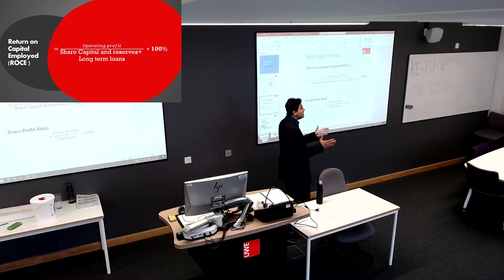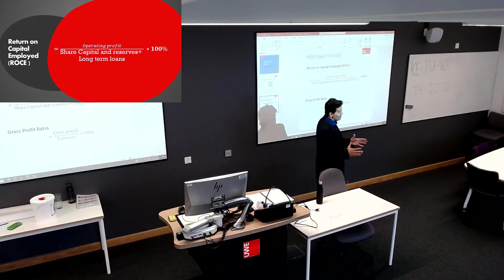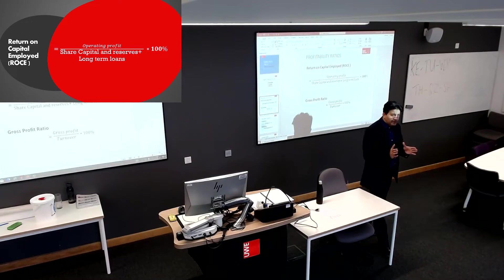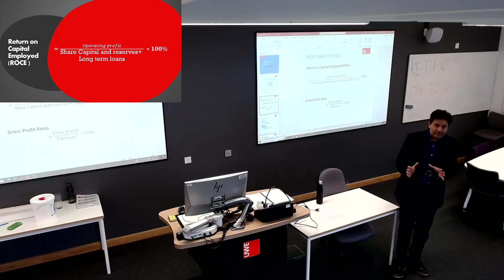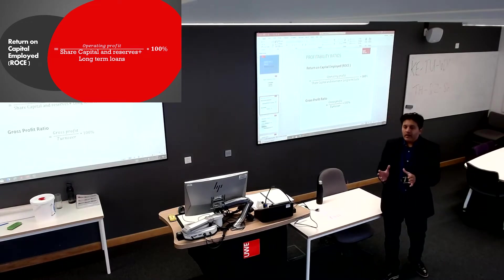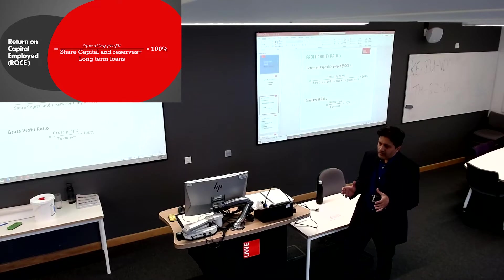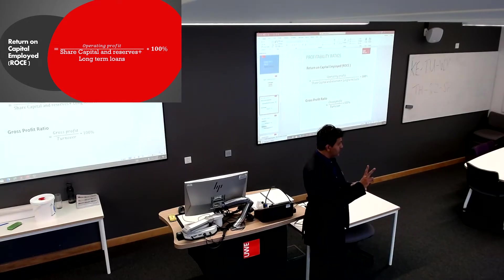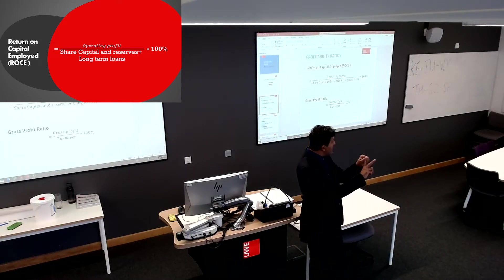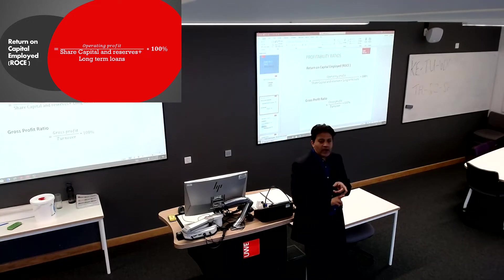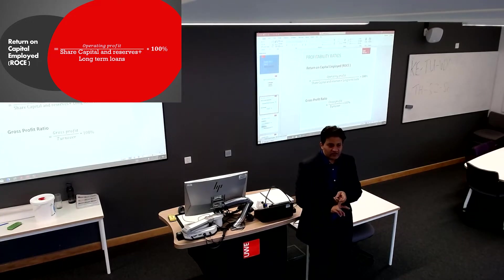There are two types of capital employed in the business: long-term capital and working capital. Long-term capital comes from two sources. One is shareholders' money, owners' money, and the second is debt — loans, borrowings.